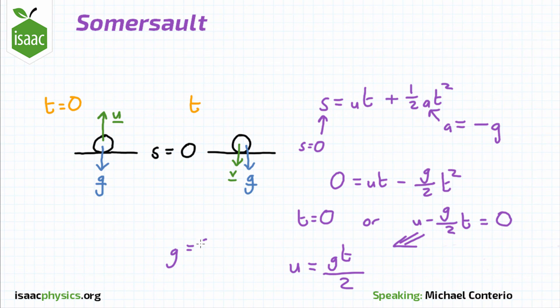We then want to substitute in the value for g with 9.81 meters per second squared, and the value for t, the time needed to complete one entire somersault of 0.8 seconds to find a numerical answer.